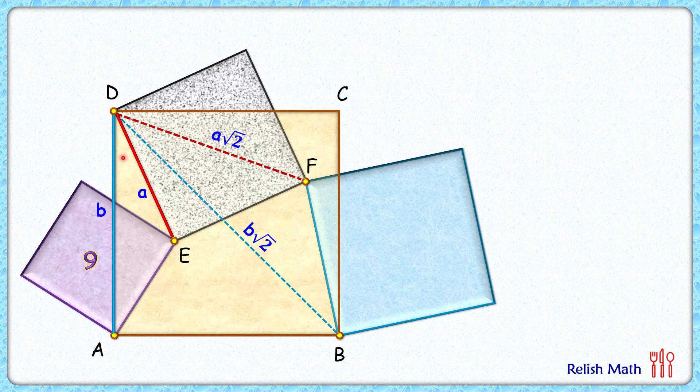In a square, the angle between the side and the diagonal is always 45 degrees. In the brown square, the angle between side length DA and diagonal DB is 45 degrees. If we assume this angle is α degrees, then the remaining angle will be 45 - α.